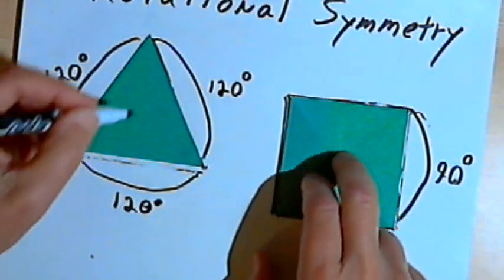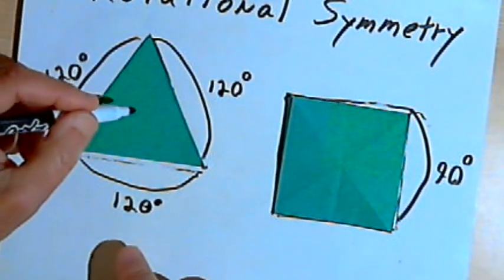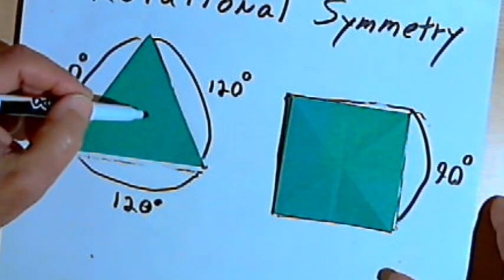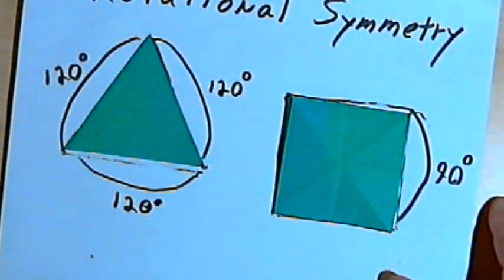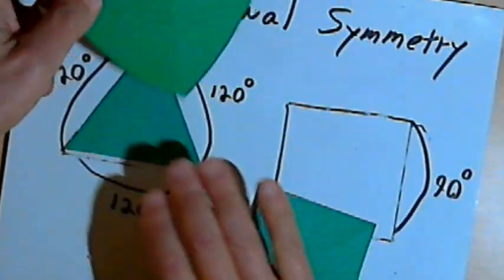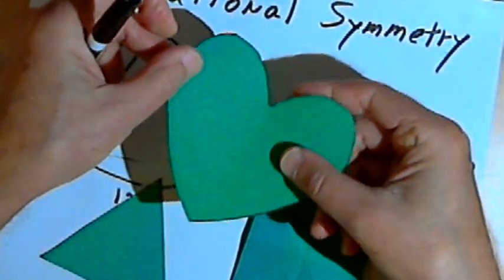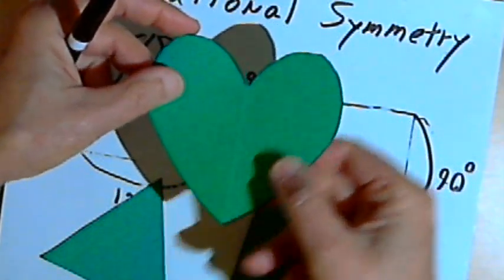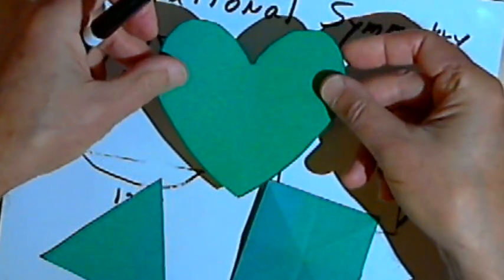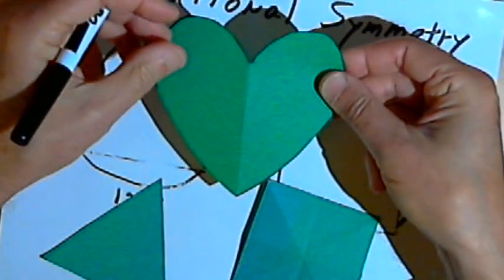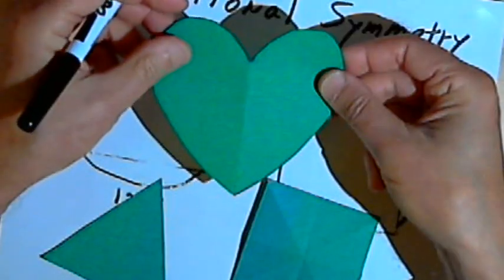So anytime you can take an image, rotate it less than a full turn, and have it match up with itself, that's going to be an example of rotational symmetry. I said less than a full turn because if I took this heart that I started out with, I can rotate it 360 degrees and it will match up, because all it's done is gone full circle. So you have to be able to rotate it less than 360 degrees to have rotational symmetry.